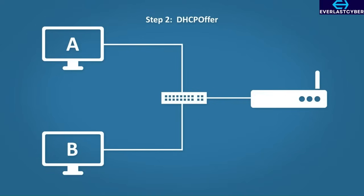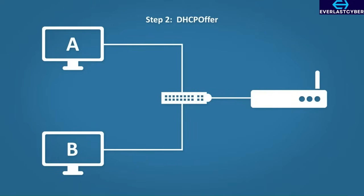Step 2: DHCP Offer. When the DHCP server gets the message, it says, 'I've got some IP addresses — how about this one?' It then sends the offer to the host. If more than one offer is given, the host will choose the first one it receives.